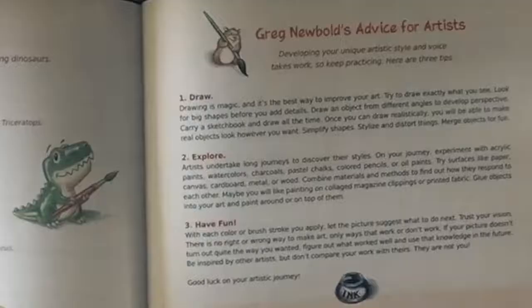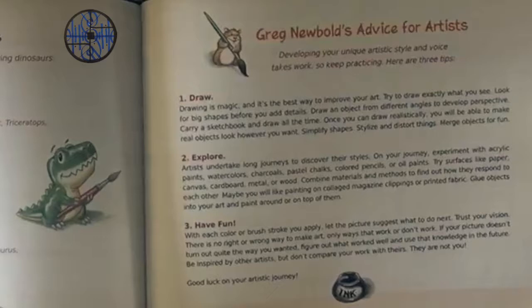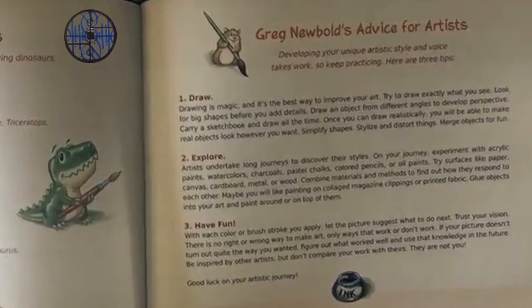Greg Newbold's advice for artists: Developing a unique artistic style and voice takes work, so keep practicing. Here are three tips. Tip 1: Draw. Drawing is magic, and it's the best way to improve your art. Try to draw exactly what you see. Look for big shapes before you add details. Draw an object from different angles to develop perspective. Carry a sketchbook and draw all the time.